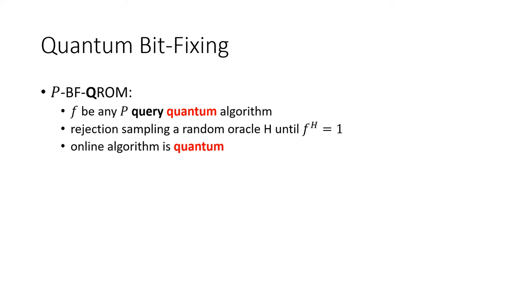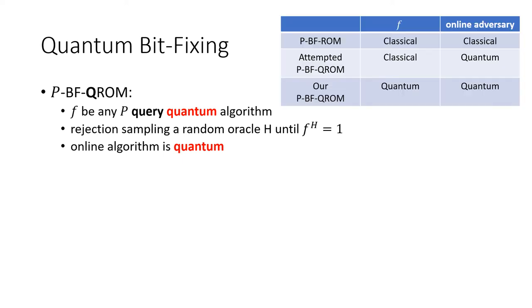We can even generalize to the quantum setting. The quantum bit-fixing random oracle model is defined as a rejection sampling of a random function conditioned on some p-query quantum algorithm output 1. We can think about it. In the classical bit-fixing model, both f and online adversaries are classical. In the attempted quantum bit-fixing model, f is still classical and only adversaries are quantum. And in our real bit-fixing quantum random oracle model, both f and online adversaries are quantum.